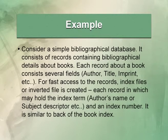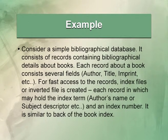Consider a simple bibliographical database consisting of records containing bibliographical details about books. Each record about a book consists of several fields like author, title, and imprint. For faster access to these records, index files or inverted files are created. Each record in the index file may hold an index term and an index number. Depending upon the index term and index number, it retrieves the data from the bibliographical database.